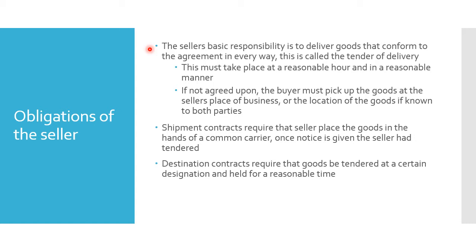If the buyer and seller haven't agreed upon delivery terms, tender of delivery takes place at a reasonable hour and in a reasonable manner. Whether I'm delivering 500 chickens or you're picking them up, you should be able to do so during business hours. 'Manner' usually relates to lot size — for example, I can't require you to pick up 500 chickens 10 at a time from 10 different farms I own; that wouldn't be reasonable and would be burdensome to the buyer.